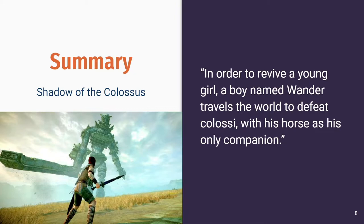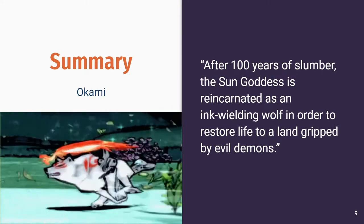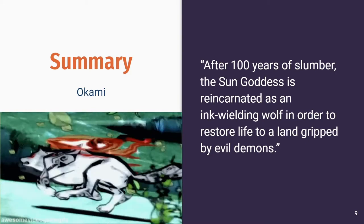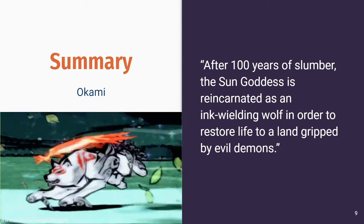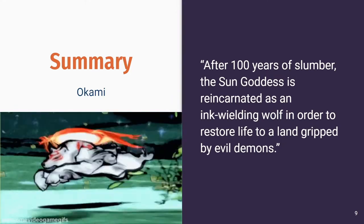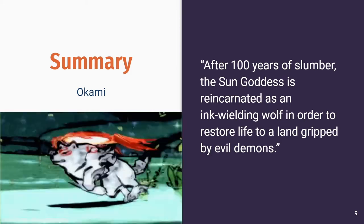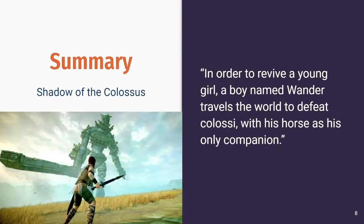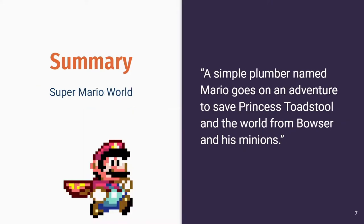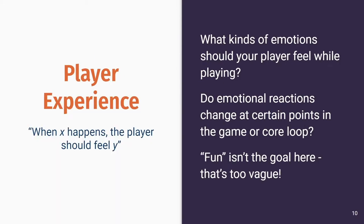In Shadow of the Colossus, the summary is: in order to revive a young girl, a boy named Wander travels across the world to defeat Colossi with his horse as his only companion. And the summary of Okami might be: after a hundred years of slumber, the sun goddess is reincarnated as an ink-wielding wolf in order to restore life to a land gripped by evil demons. In these summaries we normally try to name the player character and describe an action that might hint at a game mechanic, since narrative and game mechanics often go hand in hand.